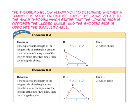The theorems below allow us to determine whether a triangle is acute or obtuse. These theorems relate to the hinge theorem, which states that the longer side is opposite the larger angle and the shorter side is opposite the smaller angle. In Theorem 8-3, if the square of the length of the longest side of a triangle is greater than the sum of the squares of the lengths of the other two sides, then the triangle is obtuse. In Theorem 8-4, if the square of the length of the longest side is less than the sum of the squares of the lengths of the shorter two sides, then the triangle is acute.